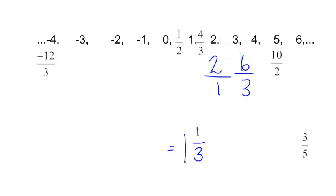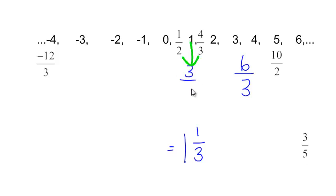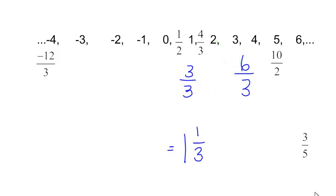If one is three over three and two is six over three, then four over three goes somewhere between the one and the two. Where would three-fifths go? Well, that's still less than one, so that goes over here.